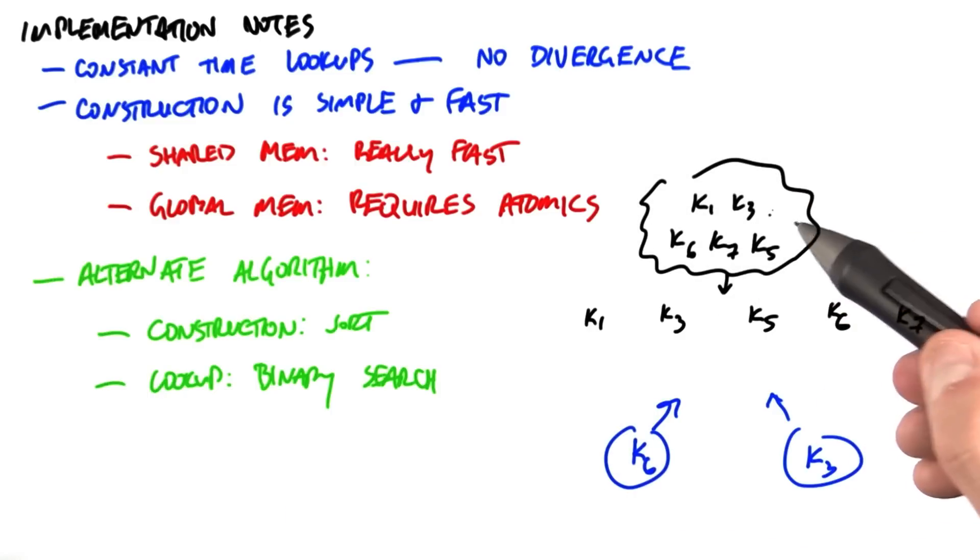So for instance, we might have five keys here in a set. To construct this particular data structure, we sort these in order of the key. And to do lookup, we just do binary search within this set.